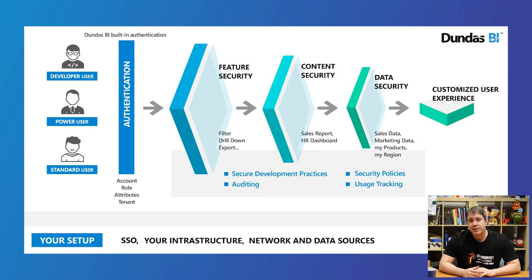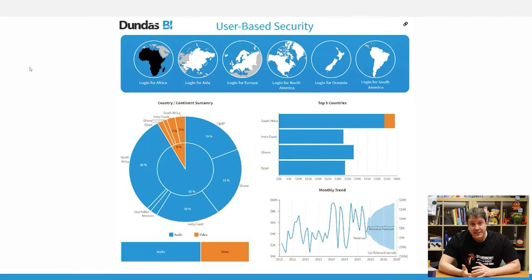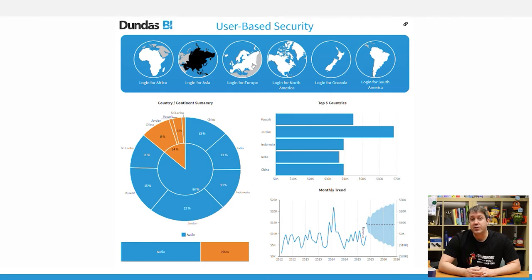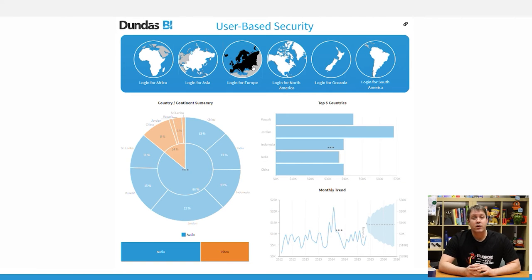Another important aspect of security is the concept of data security. Dundas BI supports user-based filtering of data, or row-level security, using attributes that describe each logged-in user and can be used to filter the data that they see. In this example, you can see that continent is associated with each user account, and as I log in as different users from different continents, we're seeing only specific data for them. A data source can also be set up where users can drag and drop, creating new visualizations or simply exploring data, but it will only show the data that's relevant to them based on who they are. This is really handy stuff.